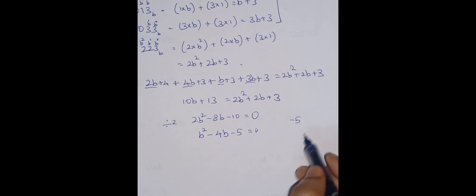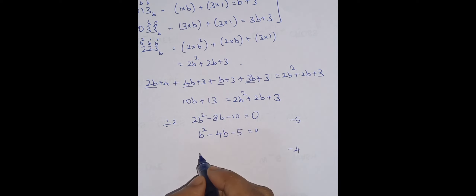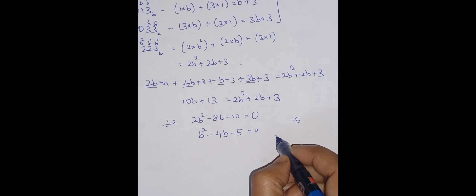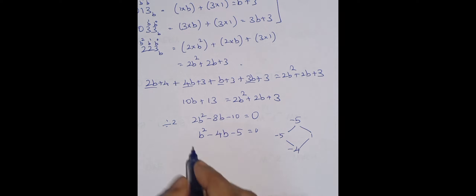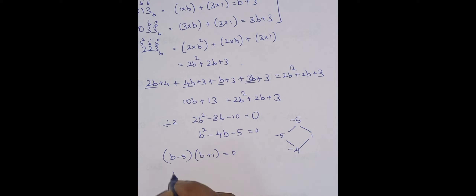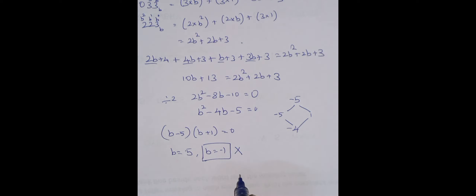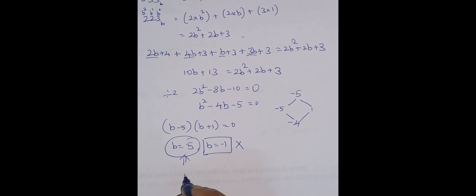To solve the quadratic, we need two numbers whose product is minus 10 and sum is minus 8 — that's minus 10 and plus 1, giving factors (b minus 5)(b plus 1) = 0... wait, so b equals 5 or b equals minus 1. Since base cannot be negative, the final answer is base 5. You can verify by performing normal addition in base 5. Thank you all.